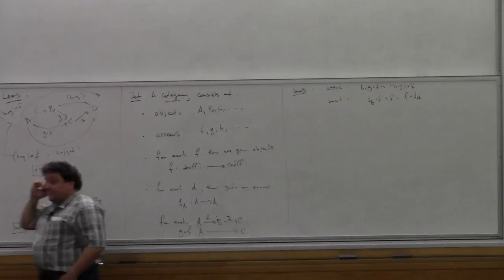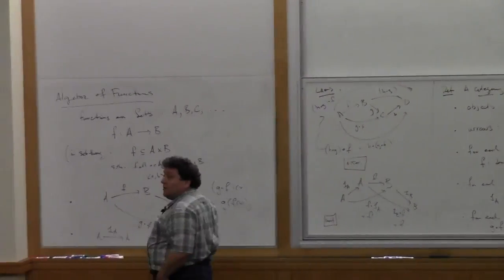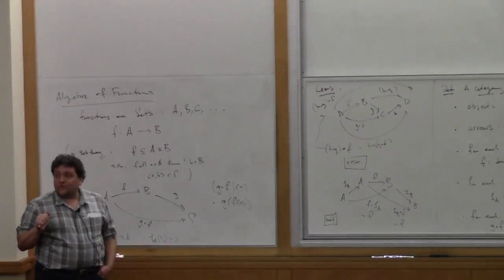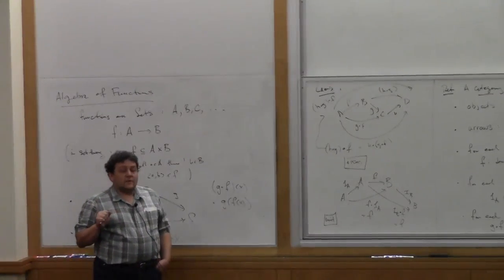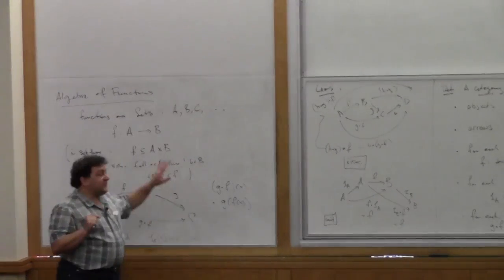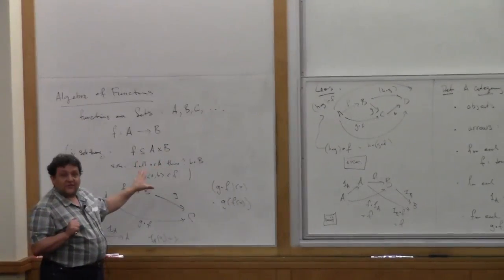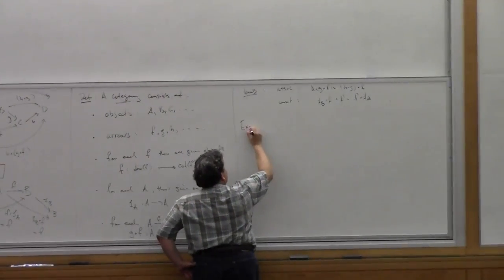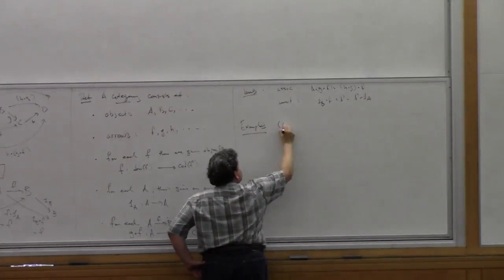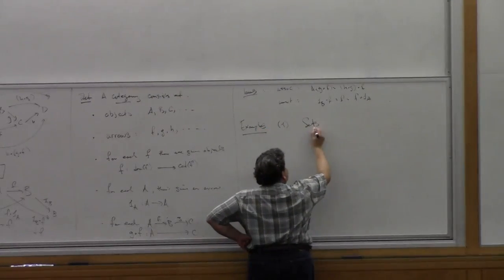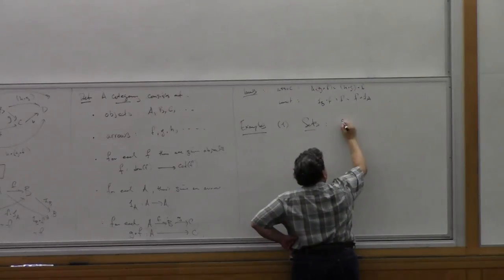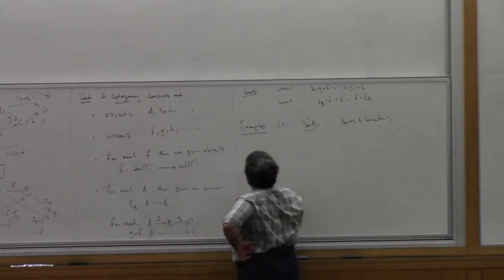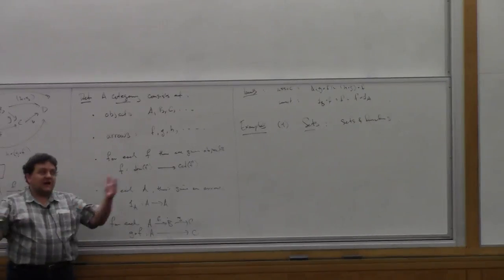That's the definition of a category. It captures our example, which we just verified satisfies these conditions. So our first example of a category is the category of Sets, where the objects are sets and the arrows are functions.